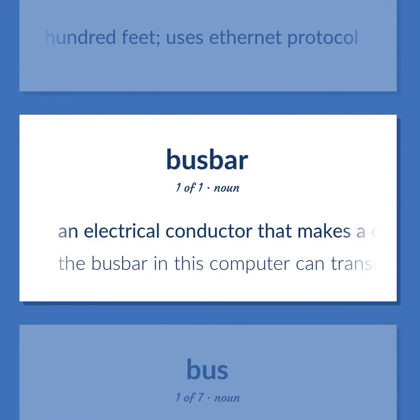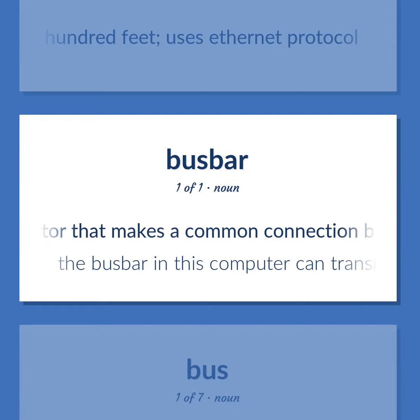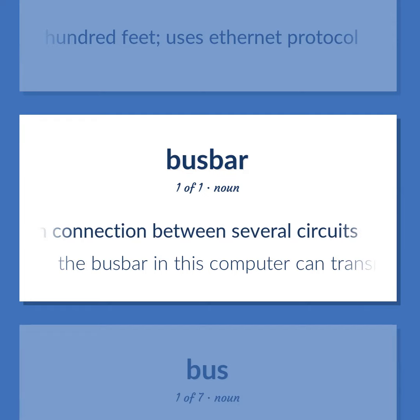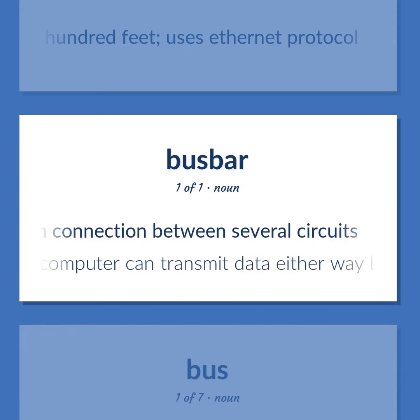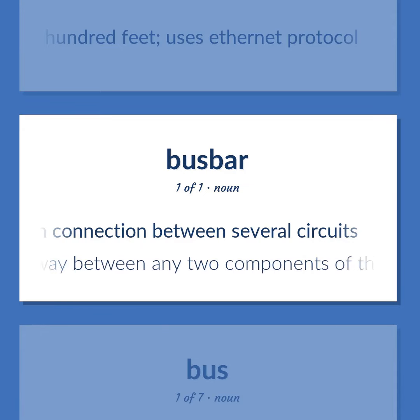An electrical conductor that makes a common connection between several circuits. The bus bar in this computer can transmit data either way between any two components of the system.